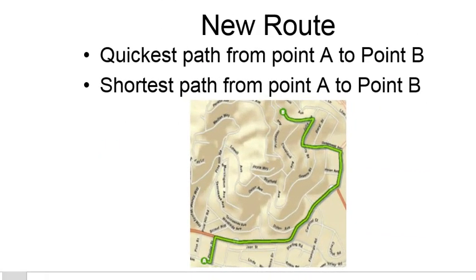One type of network analysis is called New Route Problem Solving. A new route could be the quickest path along a linear network to go from point A to point B — for example, if we have the speed limit for every road and we want to travel from A to B driving the speed limit, what's the quickest path? Or it could be the shortest path from A to B — for example, we might want to walk from point A to B and minimize our walking distance.